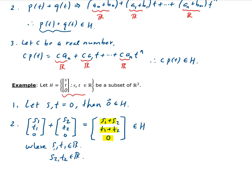For the third property, we need to multiply by a scalar. Take a scalar C and multiply it by the vector S, T, zero, and see if we get back something in H. We get C times S, C times T, and zero. C is a scalar, so these products are real values, and we've got zero. So it has this form, and therefore this belongs to H. All three properties are satisfied, so H is a subspace of R3.